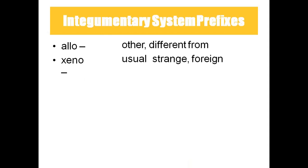Coming to other prefixes: allo means different — something different from the normal we call allo. Zeno means foreign or strange. We use these terms in grafting. If a person has third-degree skin burns and needs skin grafting, if the skin is taken from another person we call it allograft; if taken from another animal, we call it xenograft.